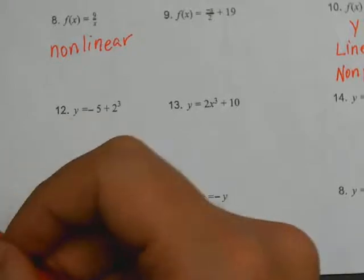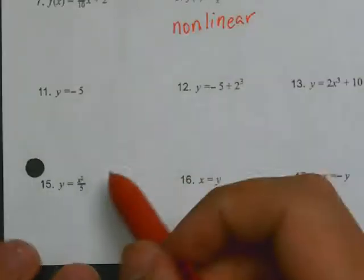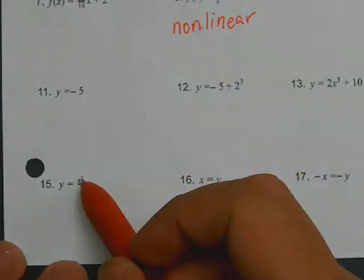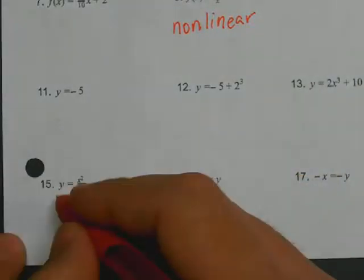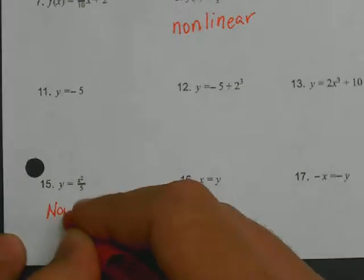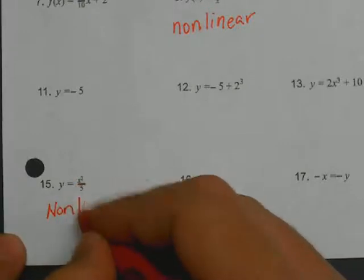Looking here at 15, y = x squared over 5. The x has an exponent greater than one, so therefore it would be non-linear. If the x has an exponent greater than one, it's non-linear. And if it's non-linear, it's neither non-proportional or proportional.